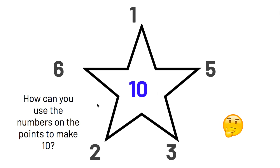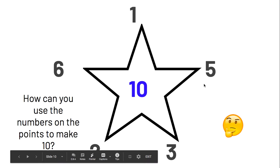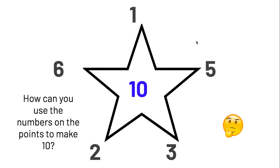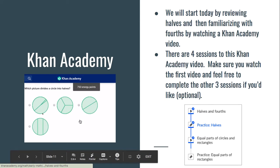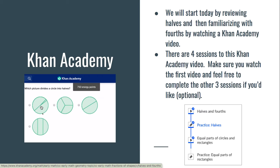Today you are going to use the numbers on the points to make 10 the target number. You don't have to use all of them — you can use just some of them — but figure out the different ways you can use the numbers to make 10. Then you're going to start by watching a Khan Academy video, which will familiarize you with fourths and review halves. Click the picture to go to the link. There are four sessions; make sure you watch the first one, and the other three are optional.